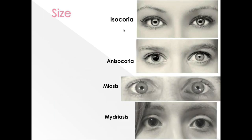When the pupils are equal in both eyes, the condition is known as isocoria. When one pupil is smaller or larger than the other — that is, unequal pupils — the condition is known as anisocoria. Miosis is the state of abnormally constricted pupils, and mydriasis is the state of dilated pupils.